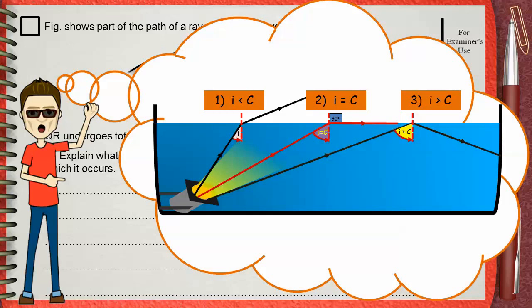In the first case, when the angle of incidence is smaller than the critical angle, this will cause normal refraction where the ray will bend away from the normal. In the second case, when the angle of incidence equals the critical angle, the ray will refract along the surface. In the third case, when the angle of incidence is greater than the critical angle, this will cause total internal reflection.